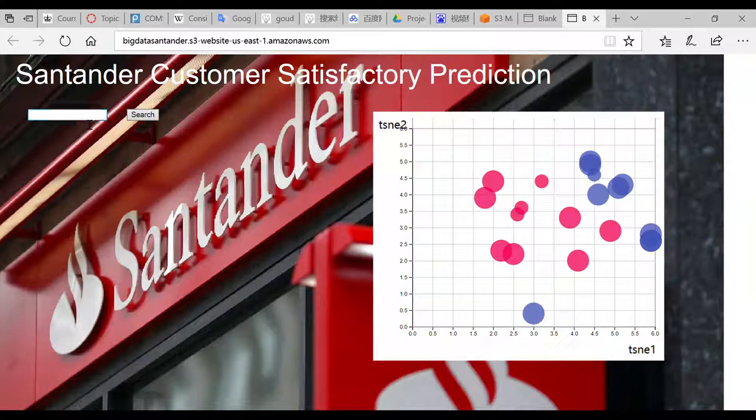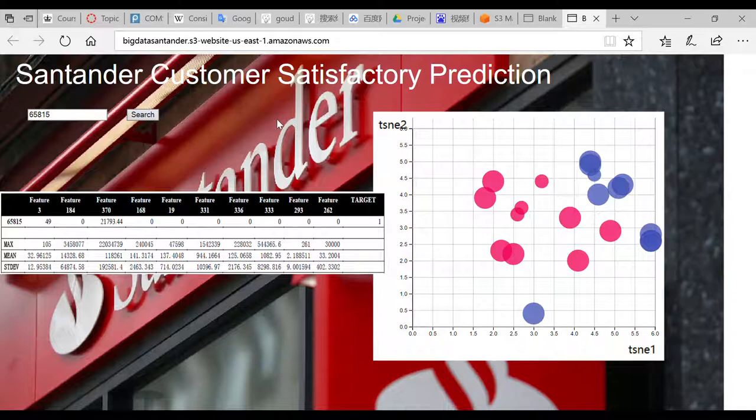Just type it in here and search. We got the results. We can see that there are 10 most important features of this customer, and the target value, and some statistics of the satisfied customers, like the max, min, and standard deviation values for each of the features.